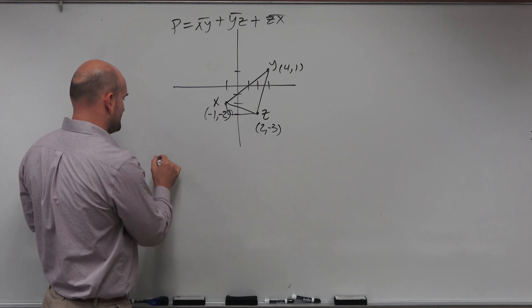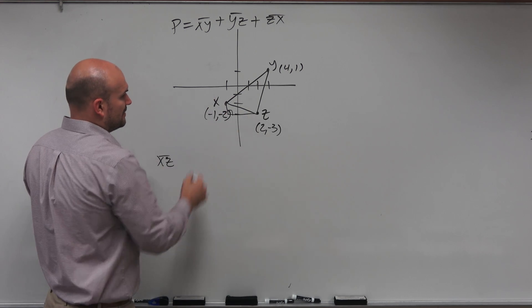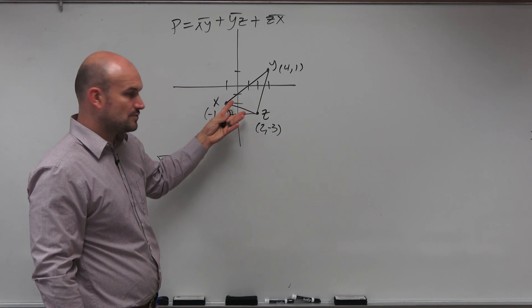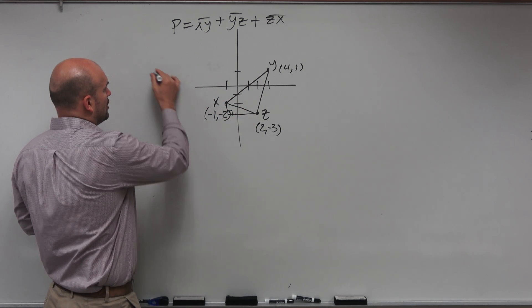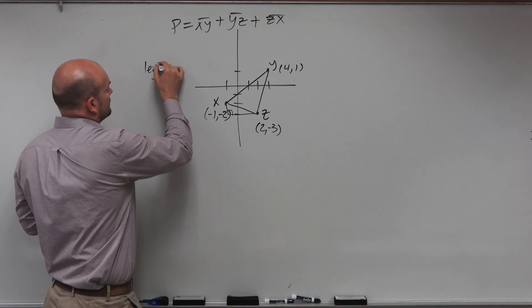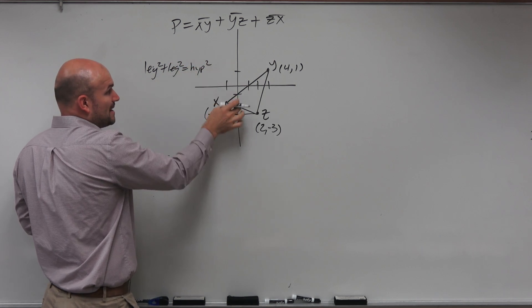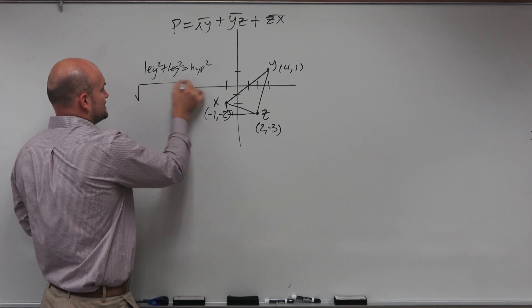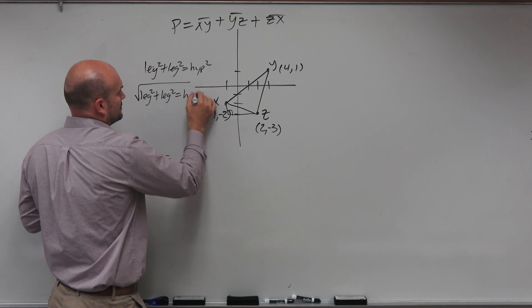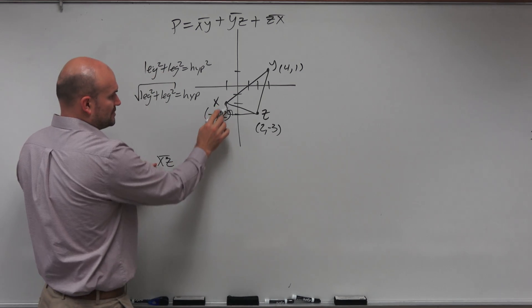So let's do xz. Because again, we need to add all these up anyways. So if I want to find xz, then I basically know via the Pythagorean theorem, leg squared plus leg squared equals my hypotenuse squared. So again, if you recall, what we did was if we have leg squared plus leg squared equals the hypotenuse squared, well, if I need to find the hypotenuse, which is the distance, then that's just going to be the square root of leg squared plus leg squared equals hypotenuse, which again represents the distance. So let's go and do that.